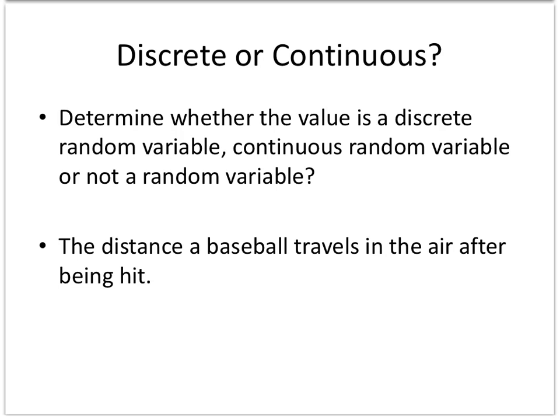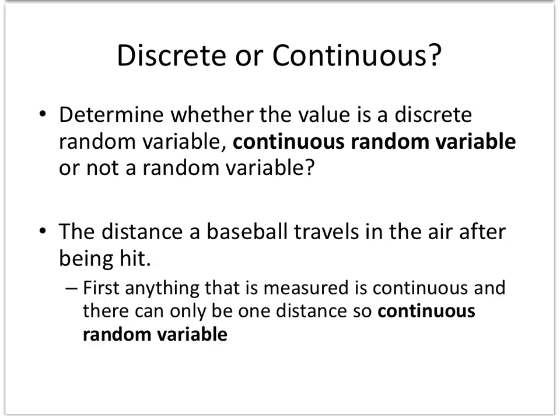So the distance a baseball travels in the air after being hit, well certainly distance is numeric. There's only going to be one actual value that it travels and it can be measured. Like distance will always be continuous. So anything measured would be continuous.